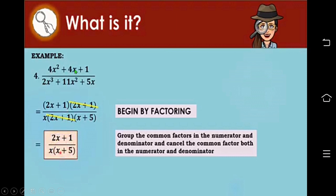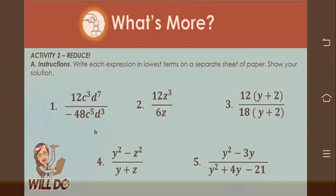For number 4, the numerator 4x squared plus 4x plus 1 is a perfect square trinomial, so its factored form is the square of a binomial. For the denominator, 2x cubed plus 11x squared plus 5x, we first factor out the common monomial factor x, and then we're left with a general trinomial where a is not equal to 1. Factoring that out, the factors of 2x cubed plus 11x squared plus 5x are x times the quantity of 2x plus 1 times the quantity of x plus 5. The common factor between numerator and denominator is 2x plus 1. Factoring that out, what's left in the numerator is 2x plus 1, and in the denominator is x times the quantity of x plus 5.